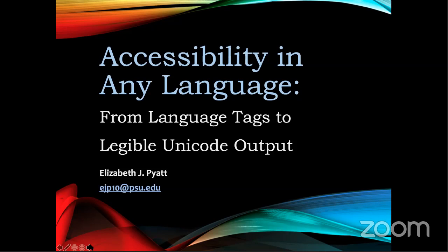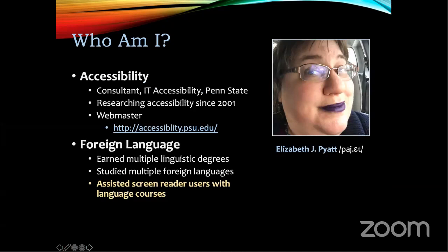We're delighted to welcome our first speaker for Inclusive Design 24 2019: Elizabeth Pyatt, who has the wonderfully appropriate subject of Accessibility in Any Language. Hello and hello world. My name is Elizabeth Pyatt — I don't normally wear purple lipstick as in the photo, but I thought it was a good one. I'm an accessibility consultant at Penn State University, so a lot of my discussion will be in the context of a North American university. I also have a linguistics degree.